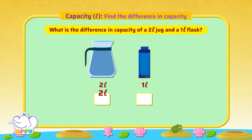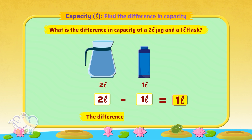2 litres minus 1 litre is equal to 1 litre. So the difference in capacity is 1 litre. That was first class work.